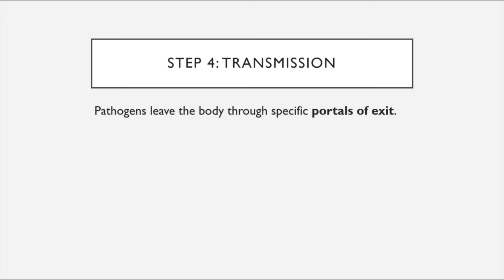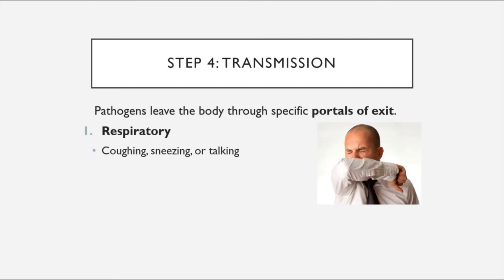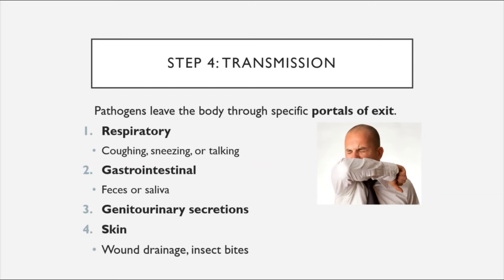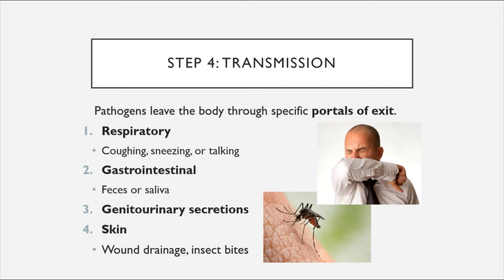Step four is transmission — the pathogen leaves the body through portals of exit. These can include the respiratory system, where pathogens leave through coughing, sneezing, or talking. The gastrointestinal system is also a portal of exit, with feces or saliva transmitting certain diseases. Genitourinary secretions and skin — including drainage from wounds or puncture marks such as insect bites — are also portals of exit. Some diseases, as we will see in Chapter 16, are transmitted by insects, and those insect bites are technically a portal of exit.